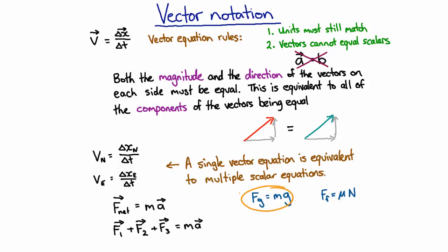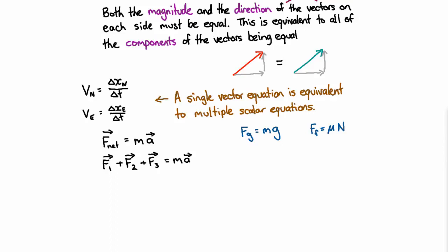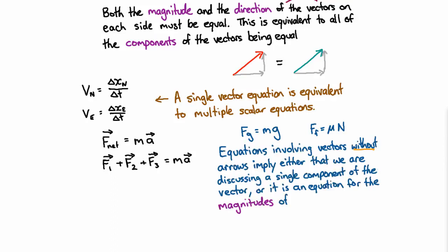Another way to look at the gravity equation is that it's the downward component of gravitational force and the downward component of the acceleration due to gravity — the other two components happen to be zero. So when you have an equation using vectors with no arrows, there are two possible meanings: it's either a single component of a vector equation, or it's talking about the magnitudes of those vectors. Which is correct? You have to get that from context — which is why it's very important to define your variables and symbols carefully.